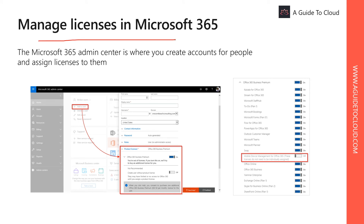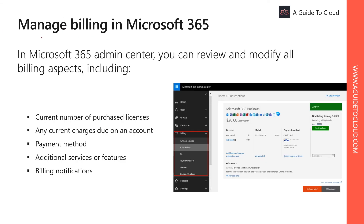When you buy a Microsoft 365 subscription, you specify the number of licenses you need based on how many people you have in your organization. If you have more than one subscription, you can assign licenses to different people for each subscription. The Microsoft 365 Admin Center is where you create a user account and then assign a license to them. You can also remove a license from one user and reassign it to a different person.